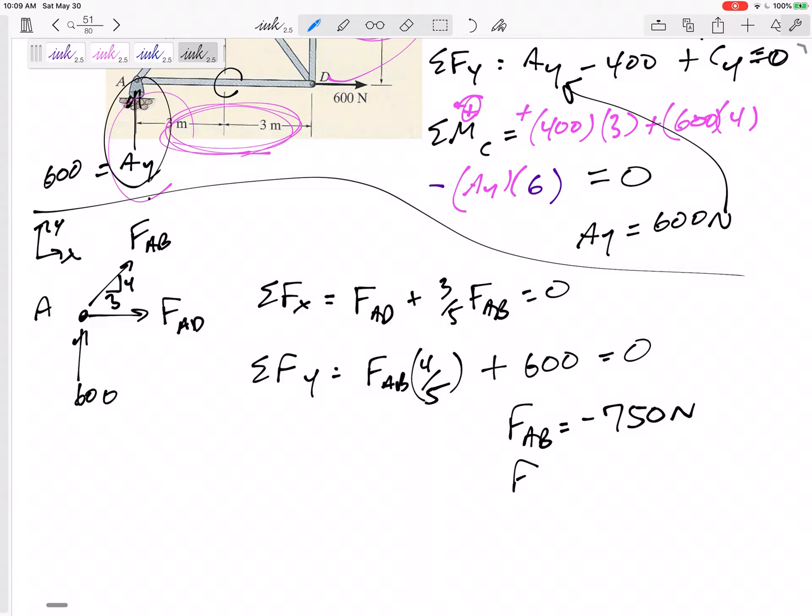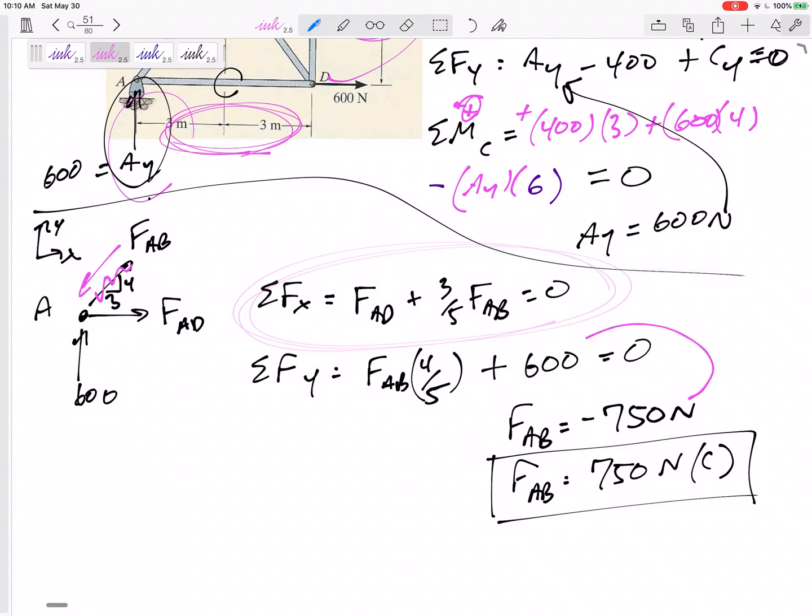So FAB, what does that negative mean? That negative means I guessed wrong. I guessed tension, so it's in compression. So 750 Newtons, compression. If you want to, you can come back over here and draw it the correct direction, but I'm not really going to be looking at your free body diagrams. Now, I need to go back and plug this back into here. Should I plug in the positive 750 or negative 750? Back when I drew this, I drew it the wrong direction. I need to plug in this negative 750.